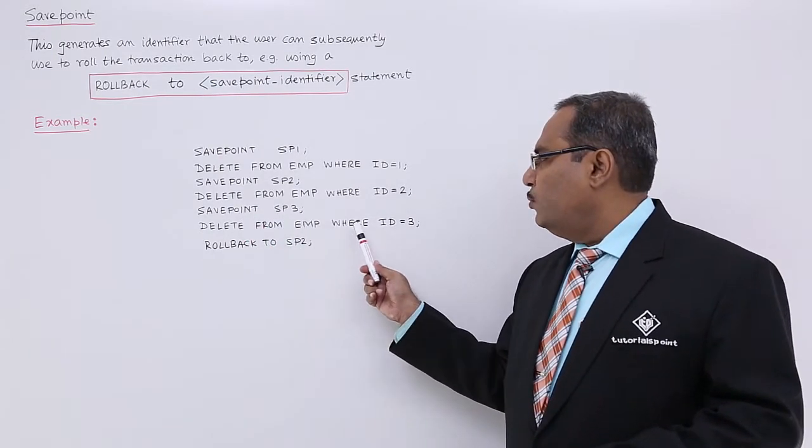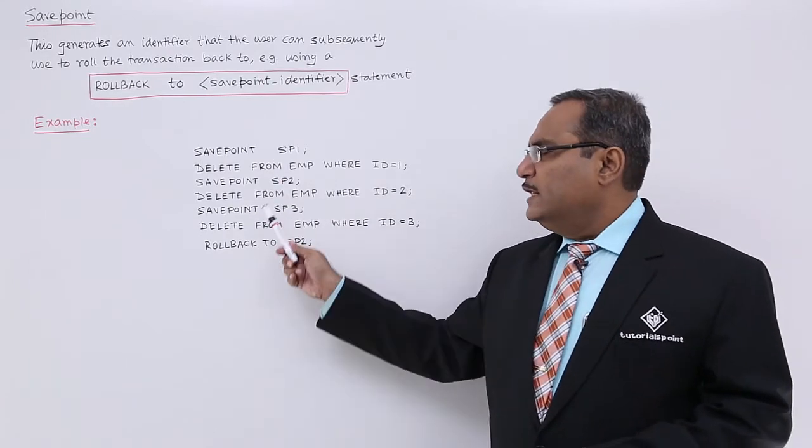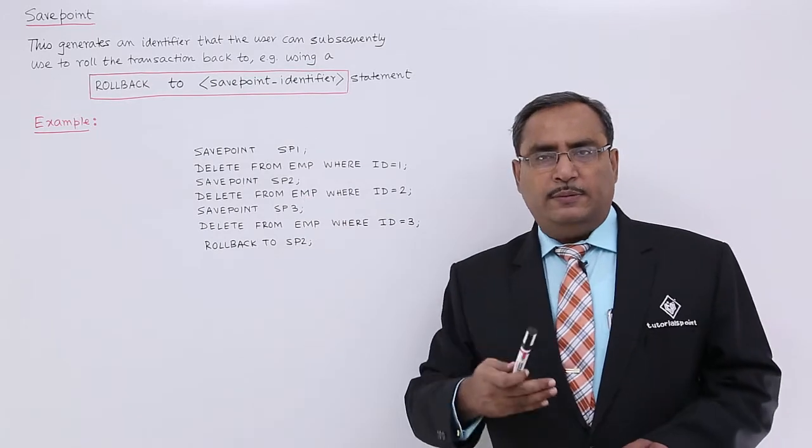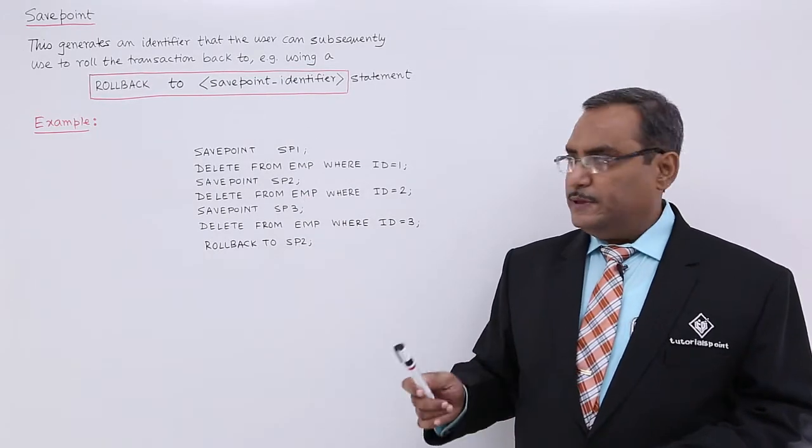delete from EMP, where ID is equal to 3. So, in this way, we have written 3 delete statements and we are having 3 SavePoints in between SP1, SP2 and SP3.